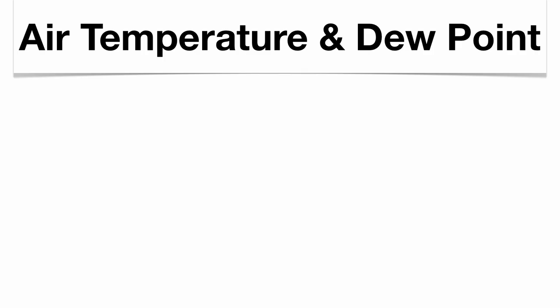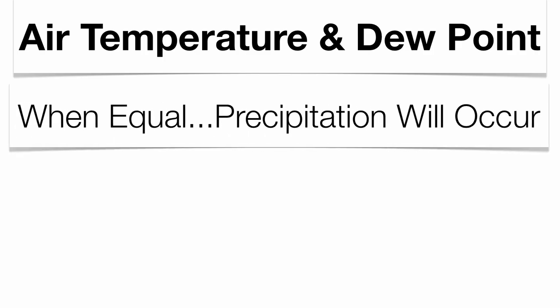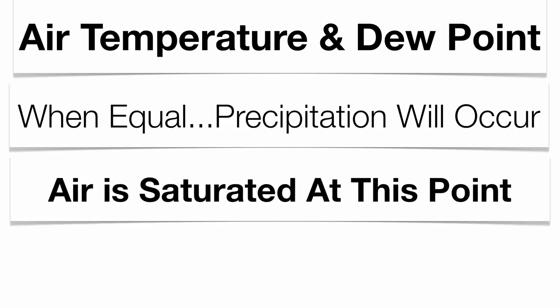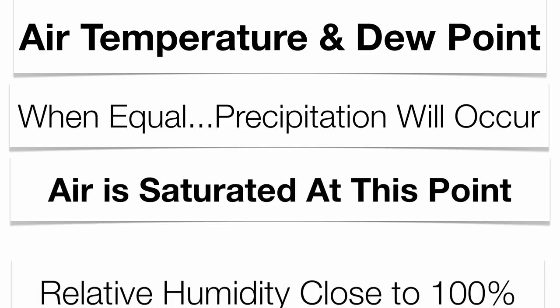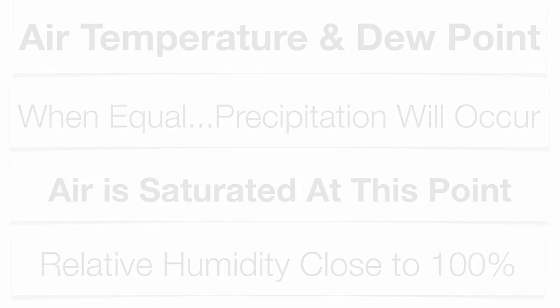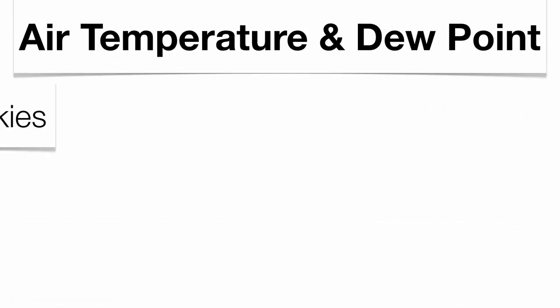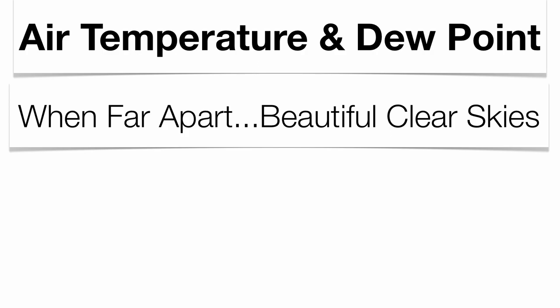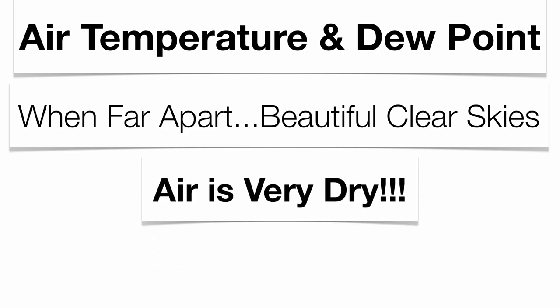Air temperature and dew point have a nice relationship with each other. When they're close together — and especially when they're equal — we know precipitation is going to occur. The air is saturated and humidity outside is going to be close to 100%. When they're really far apart, it means you have beautiful clear skies and not a lot of moisture in the atmosphere. The air tends to be extremely dry.